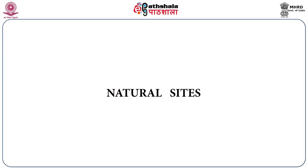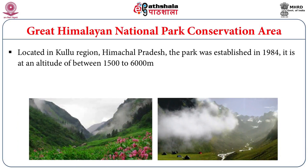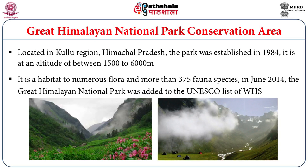Having discussed all the Cultural Heritage Sites, the next is about the Natural Heritage Sites — those which are having natural significance in the country. The Great Himalayan National Park Conservation Area is one of the recently inscribed World Heritage Sites, located in the Kullu region of Himachal Pradesh. The park was established in the year 1984, at an altitude of between 1500 to 6000 meters. It is inhabited by numerous flora and fauna with more than 375 species. It was declared as a World Heritage Site in the year 2014.